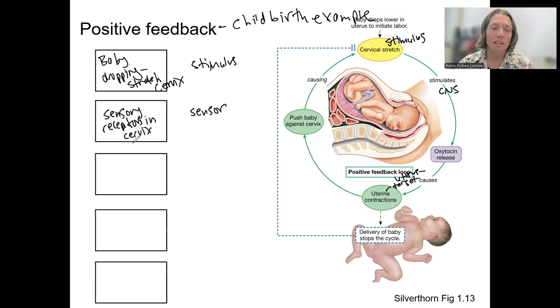Those are going to send signals, and the input signal is going to be a nervous signal that travels to the brain, CNS. And that's the control center, then sends oxytocin, a hormone, to the target, which is the uterus.